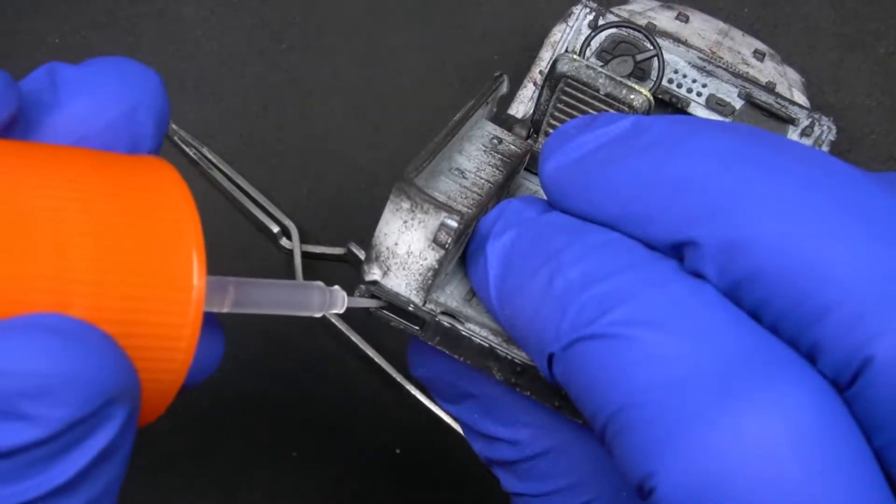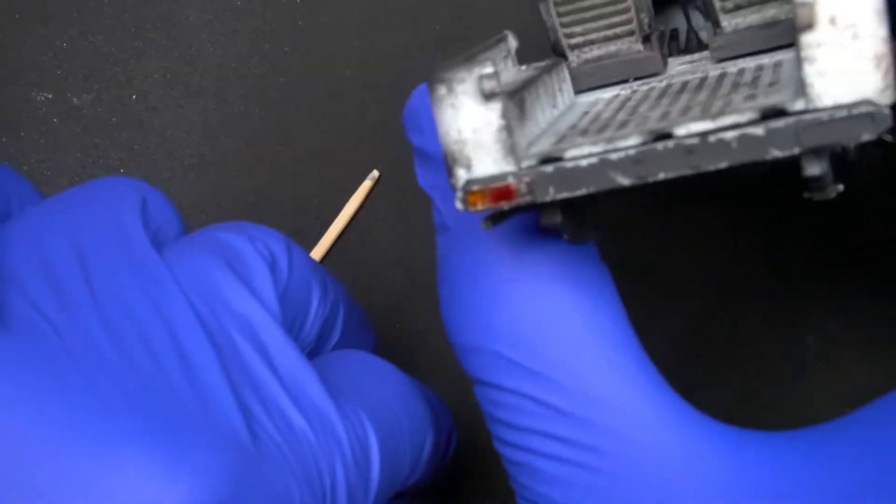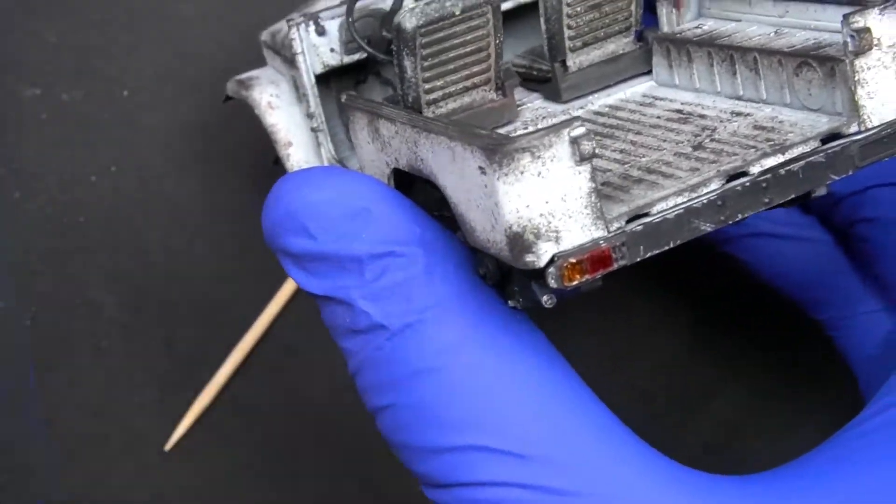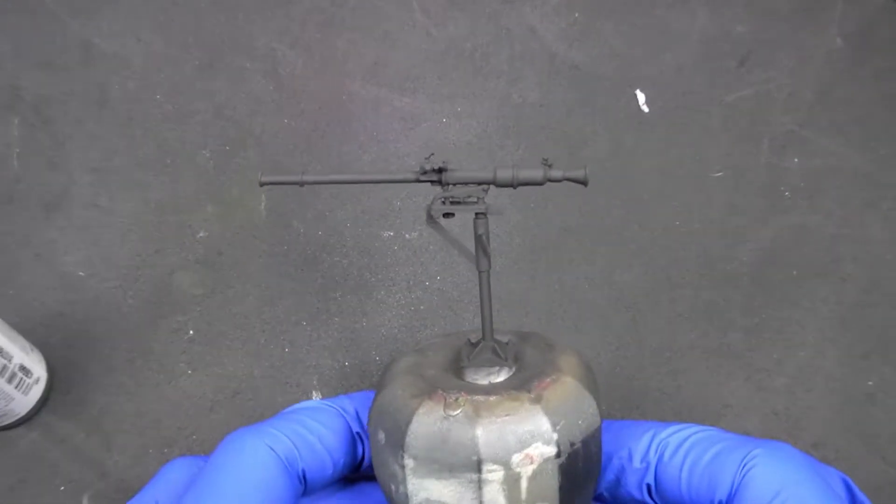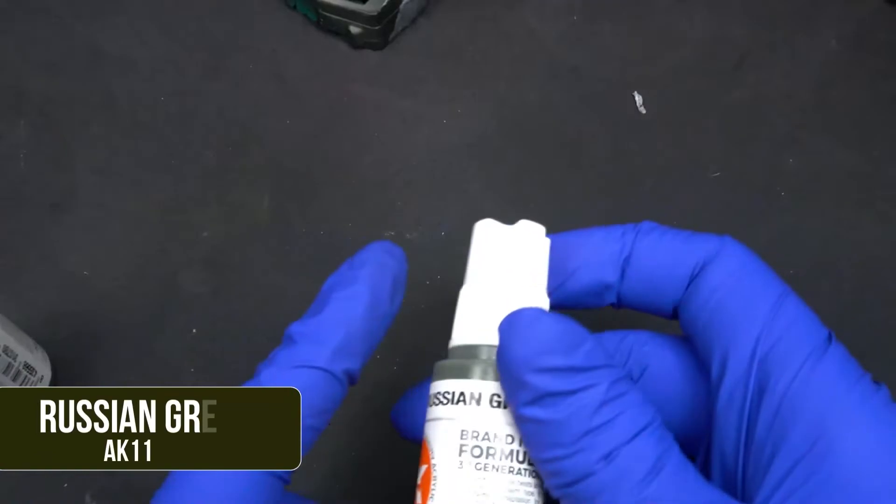It's extremely important that when placing all these transparent parts, we never use cyanoacrylate glue, as this kind of glue would dull and ruin them. The correct glue for this step will be glue made for plastic or white glue.